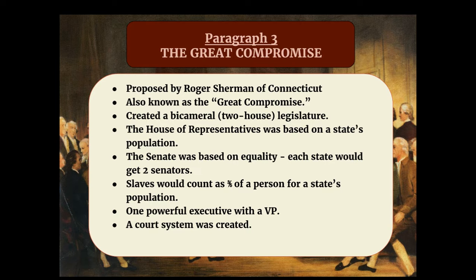The House of Representatives, one of the two houses, was based on a state's population — so the House of Representatives was similar to the Virginia Plan. They also created a Senate, borrowing that term from the Roman Empire, based on equality. Each state would get two senators, no matter how many people lived there. So the Senate was similar to the New Jersey Plan.